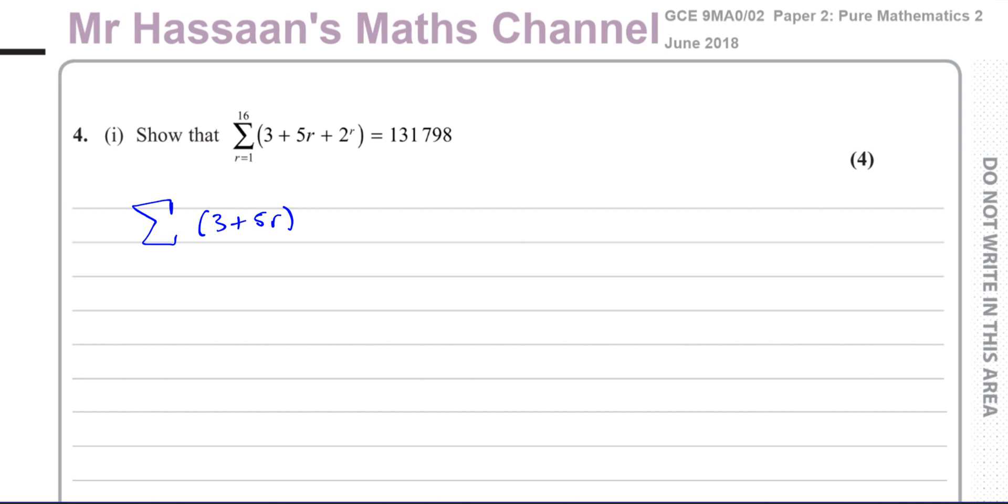This is like a geometric series, because you're going to have 2 to the power of 1, then 2 to the power of 2, 2 to the power of 3, 2 to the power of 4, and so on. And this is like an arithmetic series, where you're going to have 3 plus 5 times 1, then 3 plus 5 times 2, then 3 plus 5 times 3. So this is going to go up by 5s each time. And this is going to go up in terms of 2 to the power of something. So this one is going to be multiplied by 2 each time. So this is split up into 2 types of series.